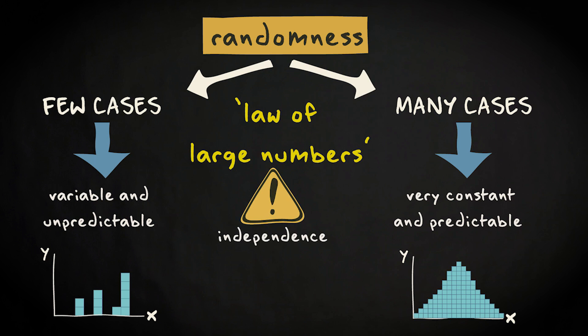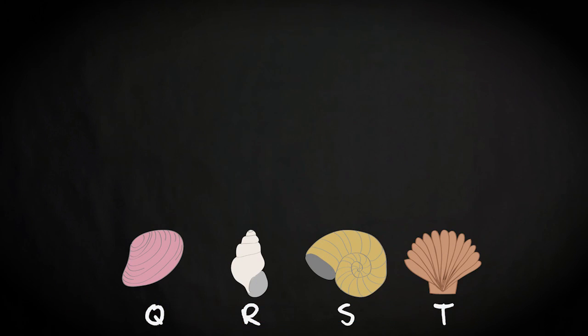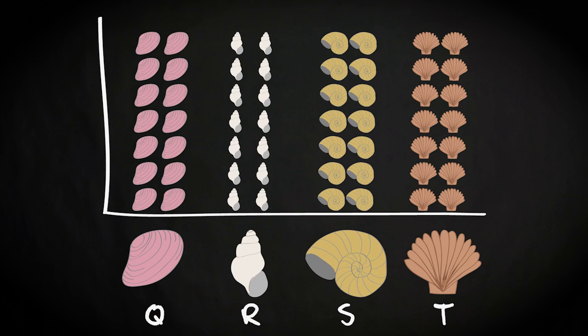It relies on independence, which means that the outcome of a random phenomenon should not be influenced by previous outcomes. Let me give an example to illustrate how the law of large numbers looks like in real life. You are on a beach and have decided to search for shells. You quickly find out that there are only four types of shell at the beach, distributed randomly and in equal quantities.